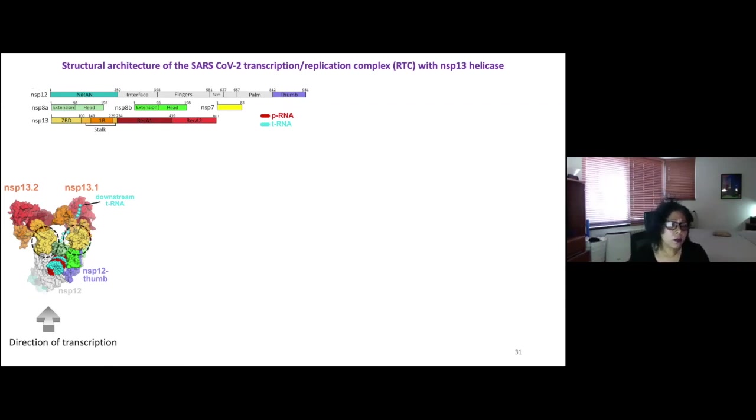So what I want you to notice here is the majority of the interactions with the RTC are happening with the zinc binding domain. The helicases actually stabilize each other's binding. So they're making an interaction between the RecA domains and the 1B domain.